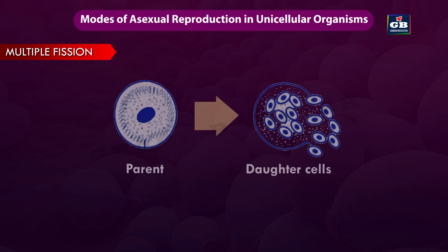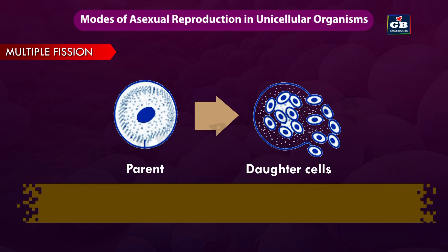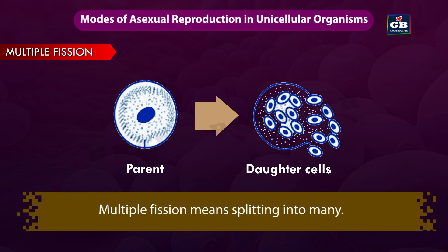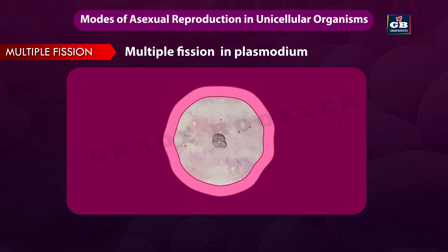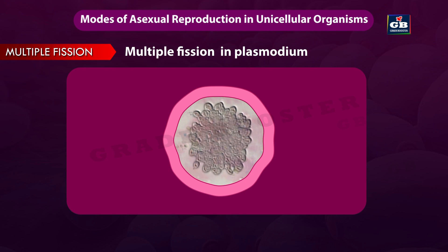Multiple fission means splitting into many — one organism splits into many new organisms. Certain single-celled organisms like Plasmodium reproduce by multiple fission.